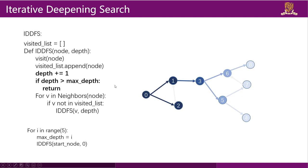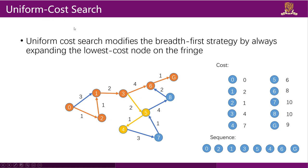This is how iterated deepening search works. If we apply it to the example graph and our goal is to traverse the whole graph, we just set the maximum depth to 5 and it will automatically visit all the nodes.